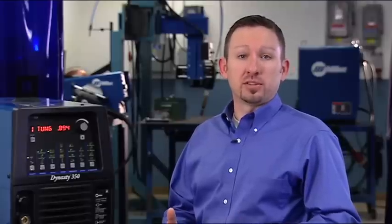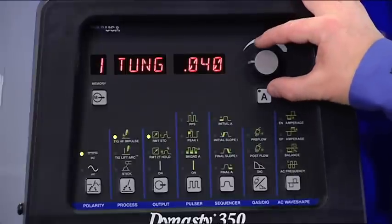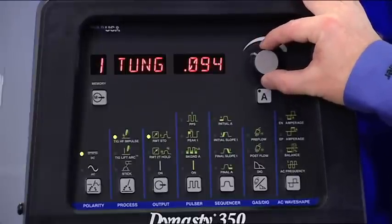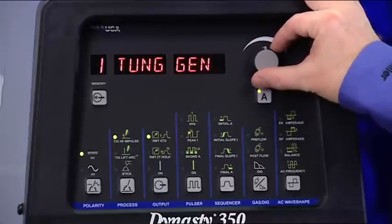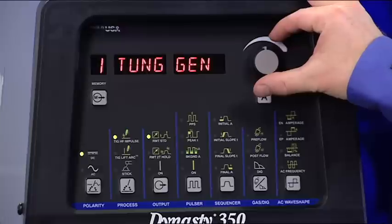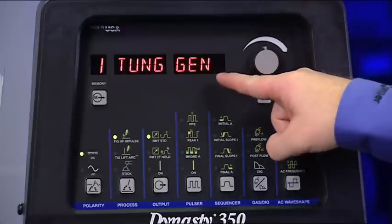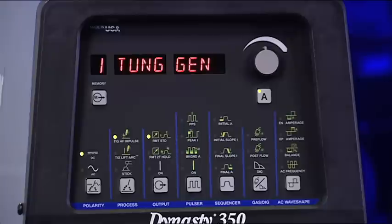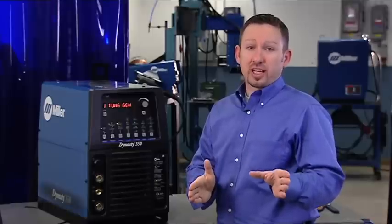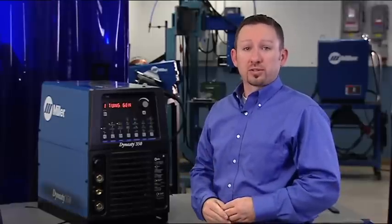Keep in mind that settings for smaller diameter tungstens produce lower amperage arc starts, while settings for larger diameter tungstens produce higher amperage starts. As you dial through tungsten settings, you'll notice the general setting, which is abbreviated GEN. This allows custom arc start settings. Only use this setting if your application requires it.